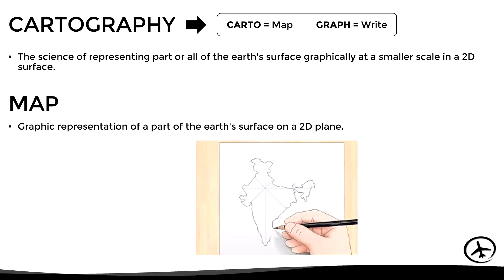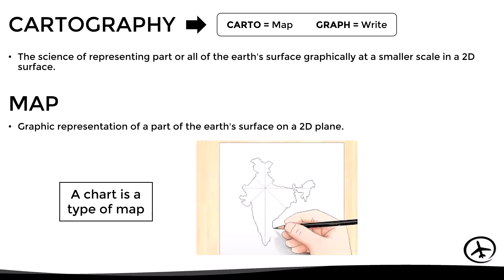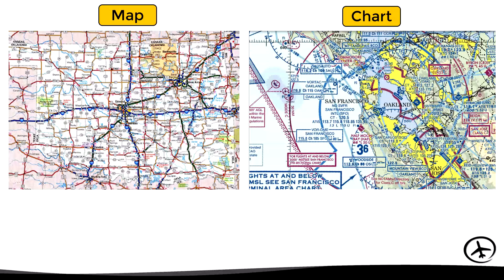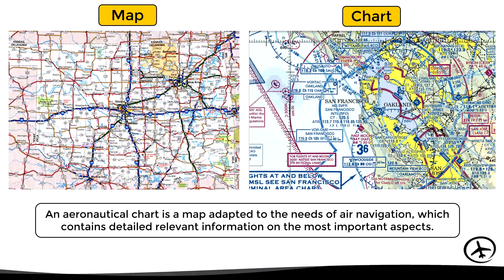Why do we sometimes say map and sometimes chart? A chart is actually a type of map. In general terms, a chart is a specialized map which contains information related to a particular purpose. For example, a nautical chart shows information such as sea depth, lighthouses, and ports to assist the navigation of ships. An aeronautical chart is a map adapted to the needs of air navigation, containing detailed relevant information on obstacles, nav aids, airports, airspaces, etc.